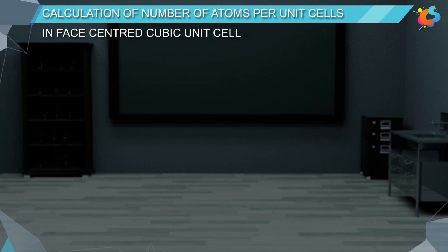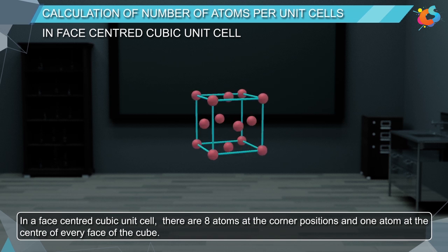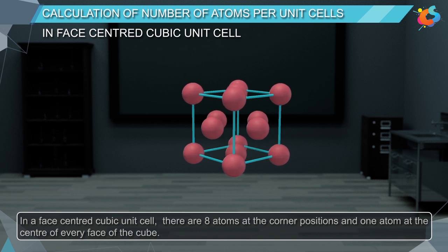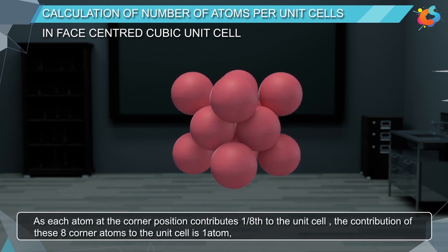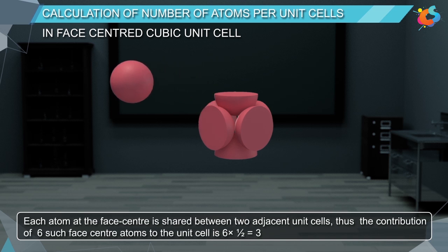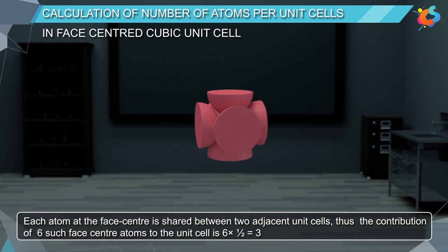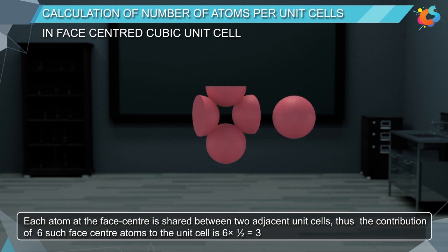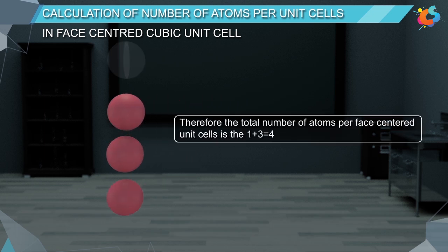Calculation of number of atoms per unit cell in a face-centred cubic unit cell. In a face-centred cubic unit cell, there are eight atoms at the corner positions. As each atom at the corner position contributes one-eighth to the unit cell, the contribution of these eight corner atoms is one atom. Each atom at the face centre is shared between two adjacent unit cells. Thus, the contribution of six such face-centred atoms to the unit cell is 6 × 1/2, which equals 3. Therefore, the total number of atoms per face-centred unit cell is 1 plus 3, which equals 4.